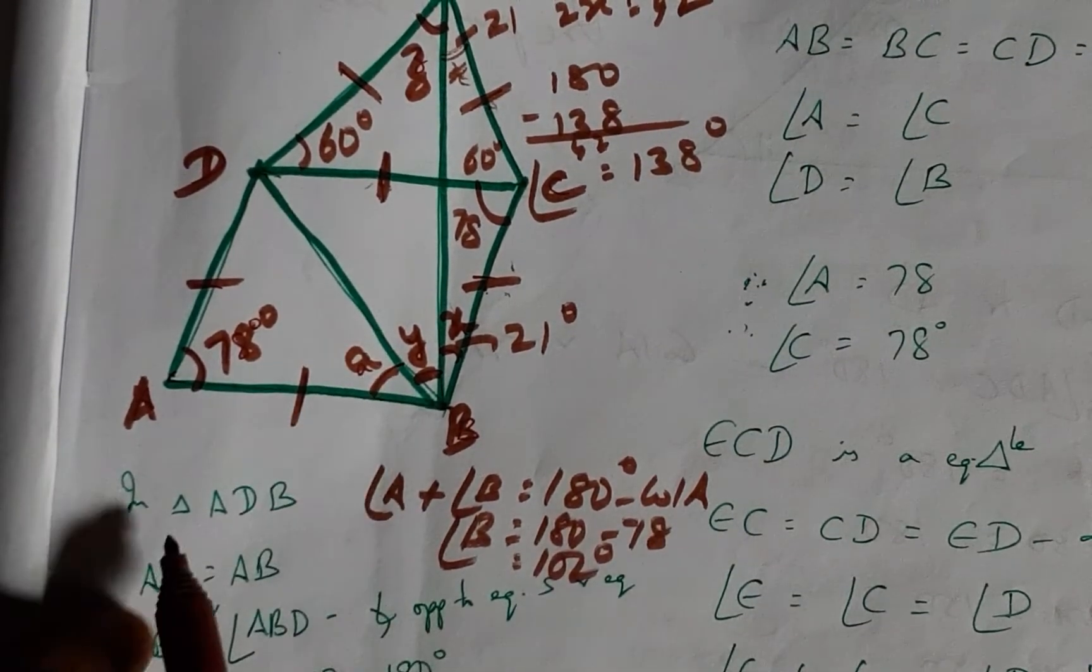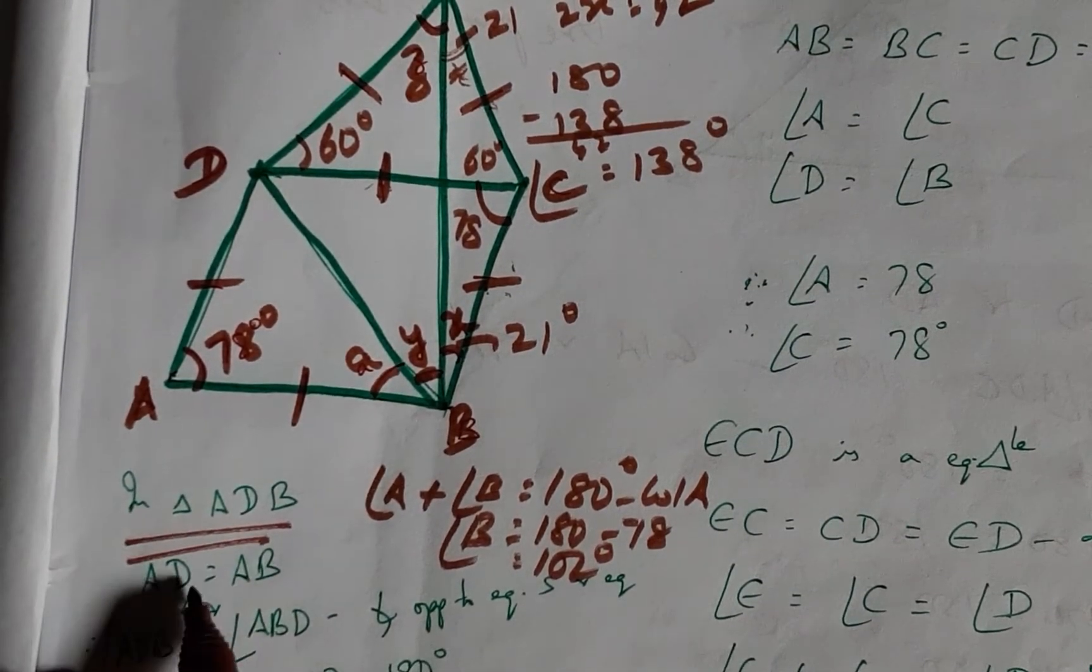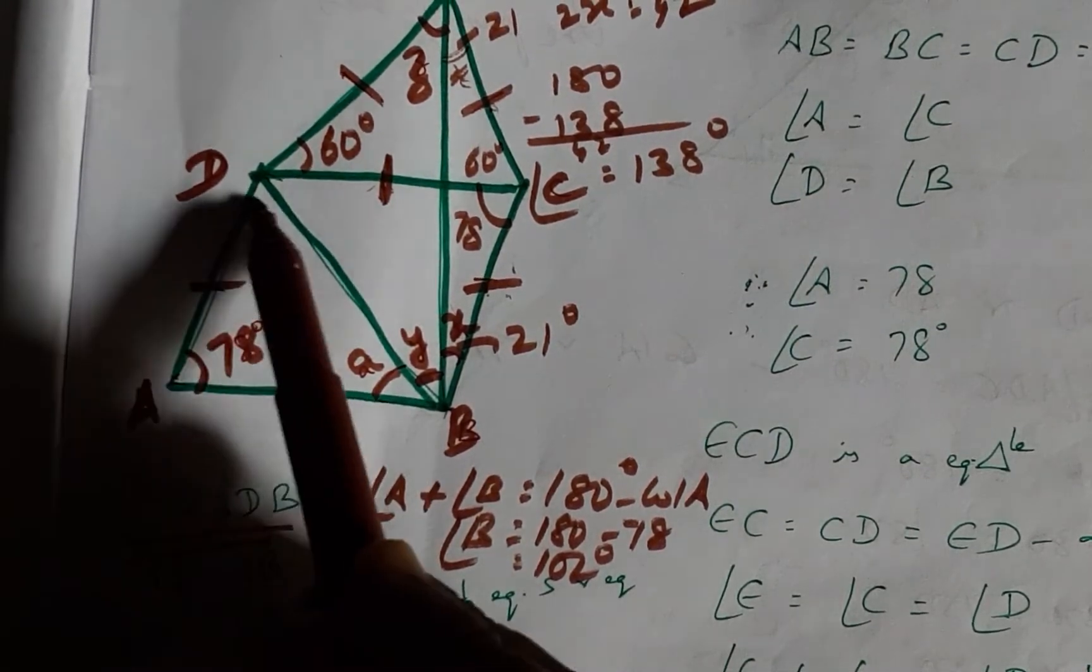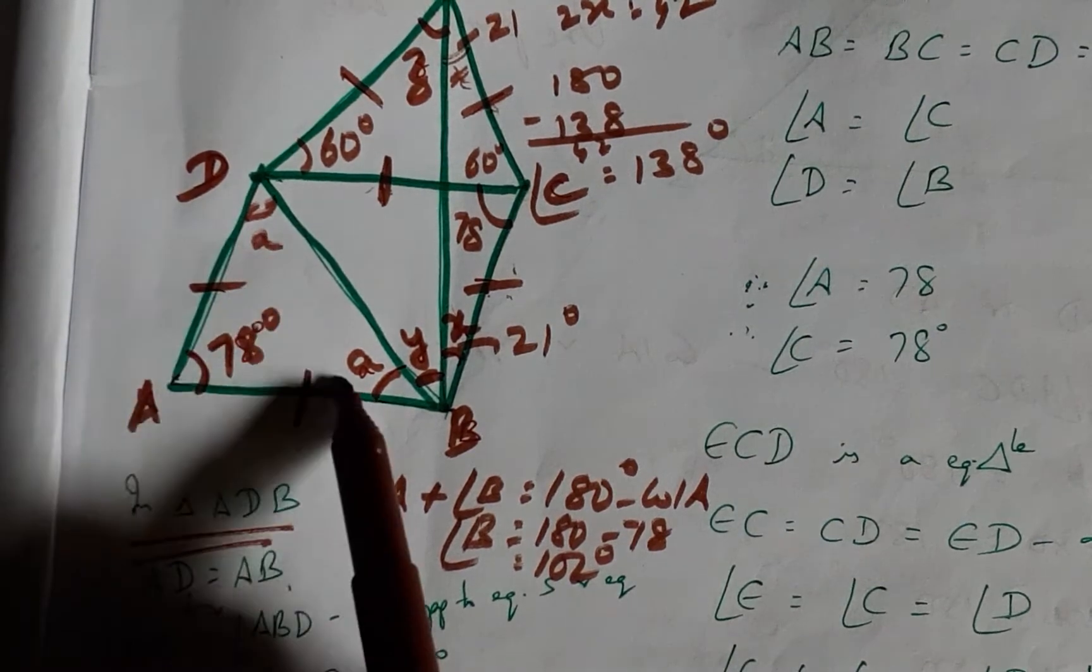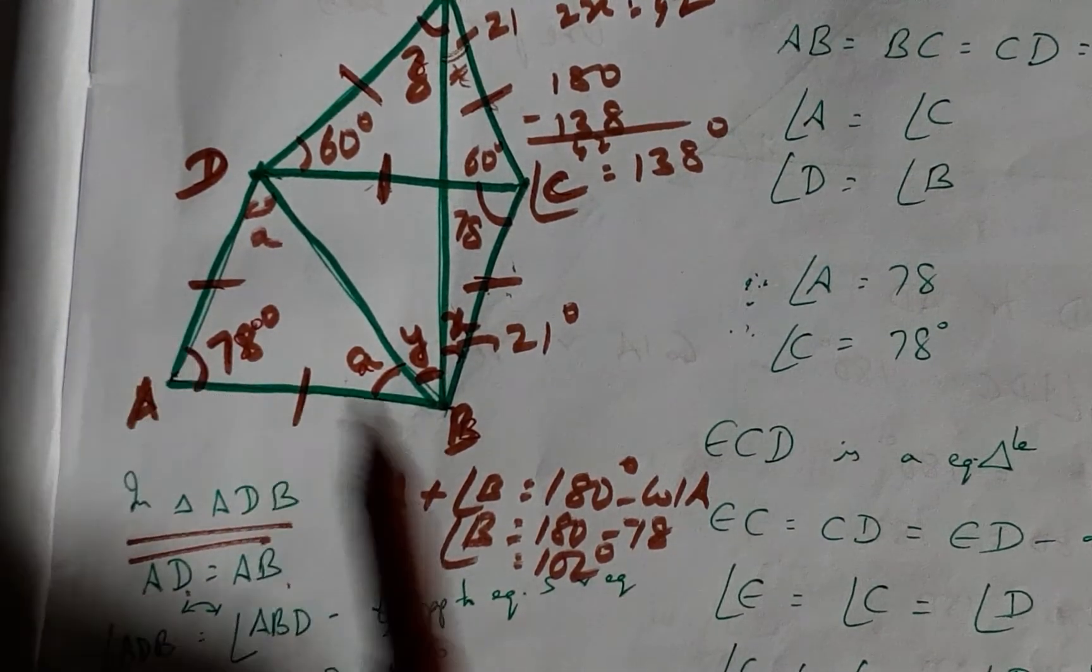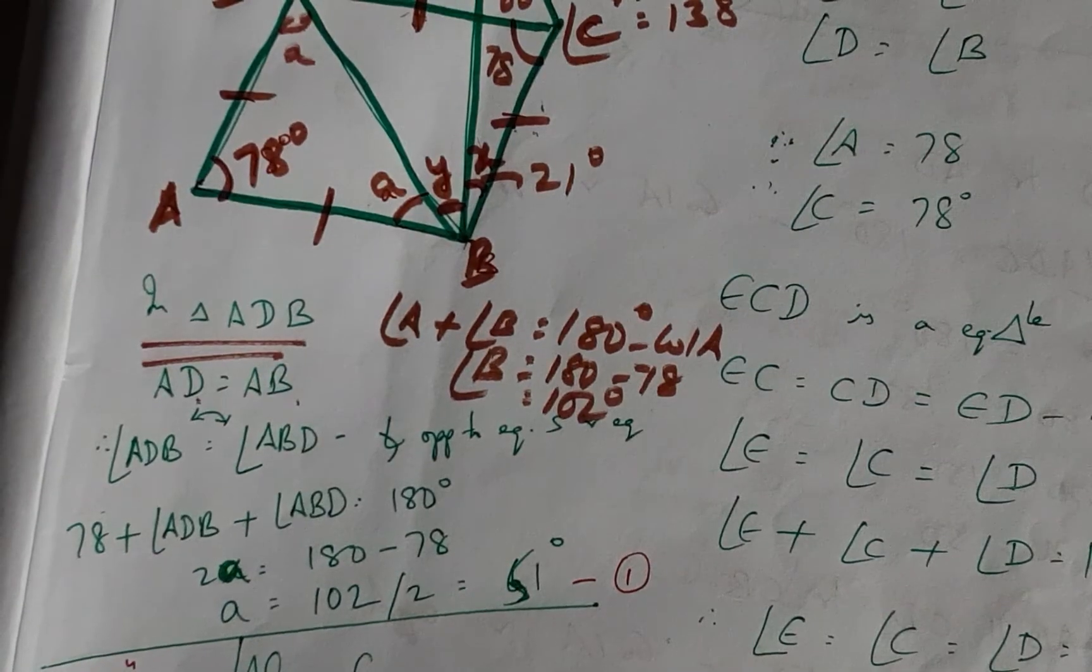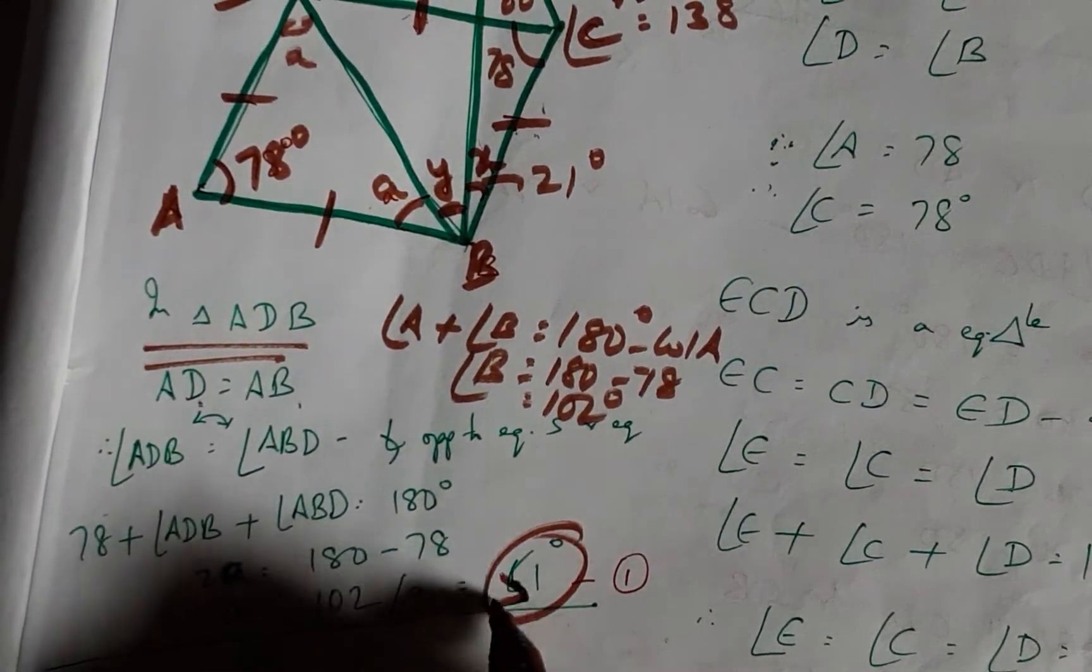And coming to triangle ADB, herein we have AD equals AB. Once again, the sides are equal. Therefore, if this is A, this is also A, then 2A plus 78 is 180 degrees by angle sum property of triangle ADB. And from that, we have A value as 51 degrees.